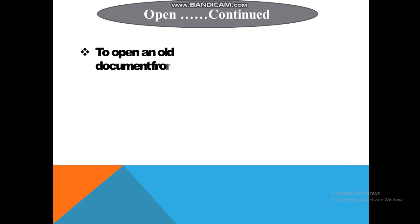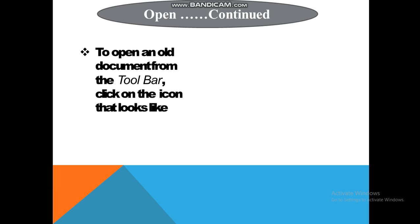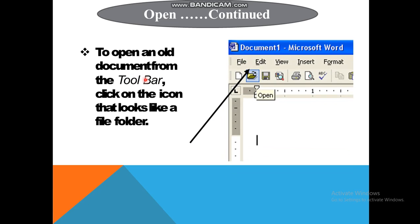To open an old document from the toolbar, click on the icon that looks like a file folder. Toolbar पे भी Open option available है। आप देख सकते हो — यह folder जो खुला हुआ दिखाया गया है, यह दिखा रहा है कि हम यहाँ कोई file open कर सकते हैं। इस पे click करके आप अपनी file को open कर सकते हो।